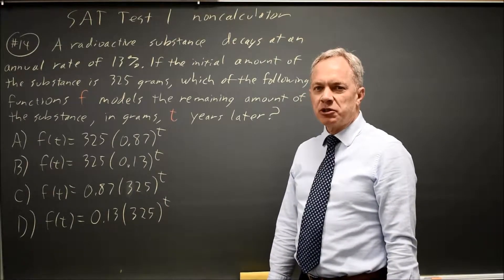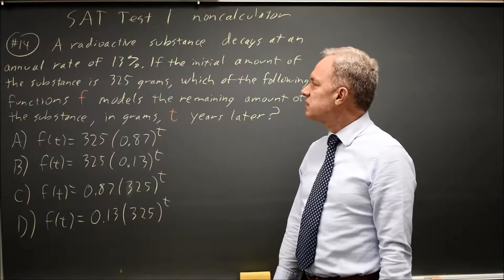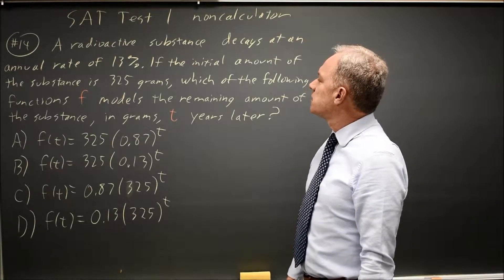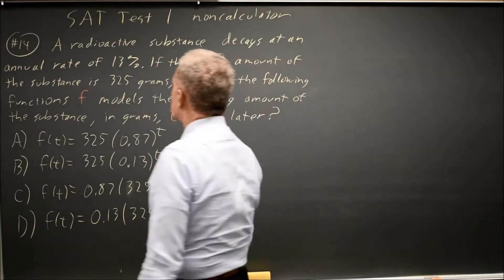These equations are exponential, which you expect for radioactive decay because a certain proportion decays each year. In this case, it decays at a rate of 13%, and we start with 325 grams.